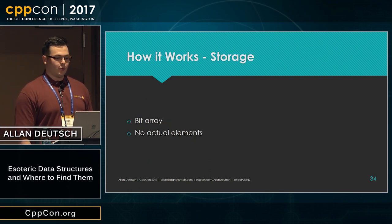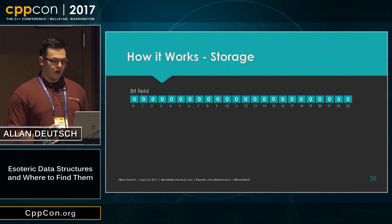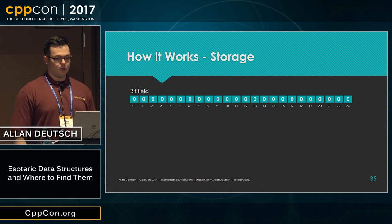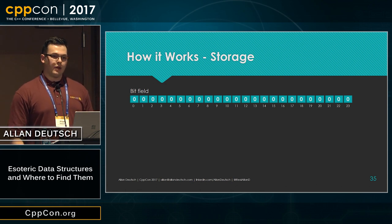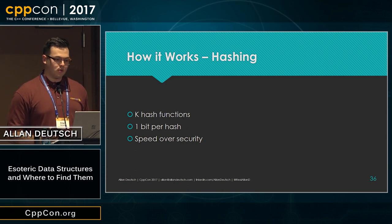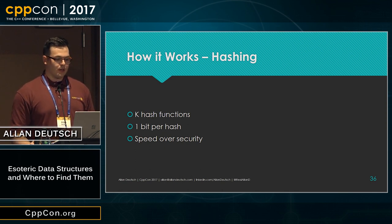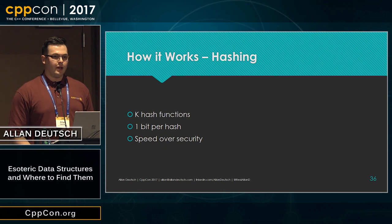The way a bloom filter works under the hood — let's start with the storage. It's actually a bit array, and as mentioned before, it doesn't have the actual elements. We have bits 0 through 23 for a total of 24 bits. These are going to get set by various hash functions whenever you insert an element. The hashing works by having k hash functions, where k is some user-specified amount based on the margin of error you want. Each hash will set one bit based on whatever element you're inserting. For these you prefer speed over security for your hash functions, since you're not storing your data anyway, it's not that important that they be cryptographically secure.